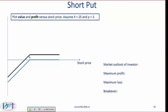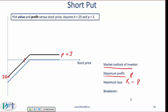Short put is the mirror image with the same break-even point. For the short put, the maximum loss is 22 (X minus P) and the maximum gain is the price of the put option, which is 3. If an investor believes that the market will stay the same or go up a little, then it makes sense to take a short put position. Maximum profit is P, maximum loss is X minus P, and break-even is X minus P. All these lines are 45-degree lines.